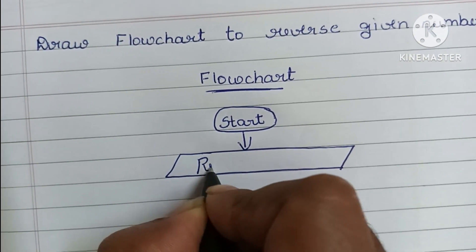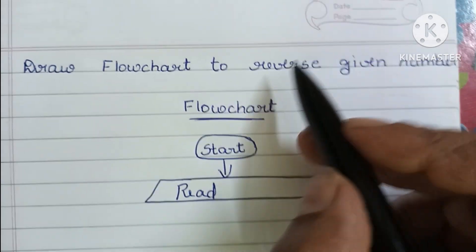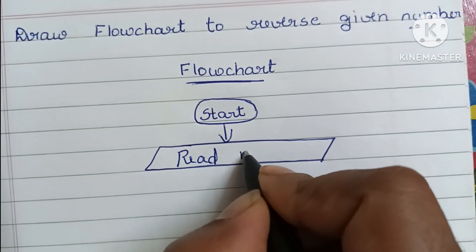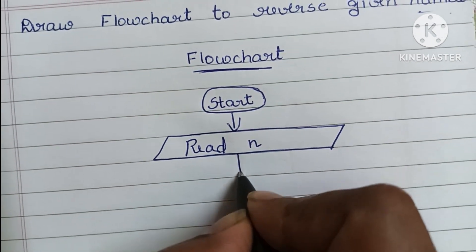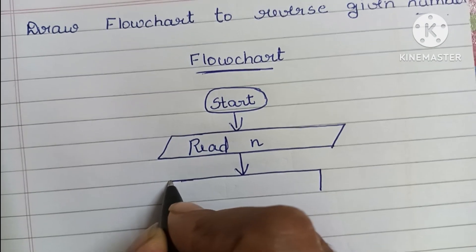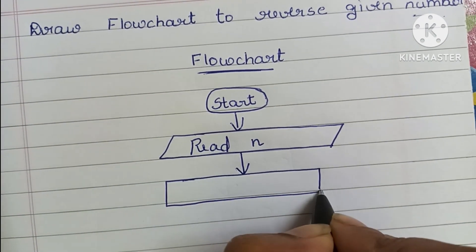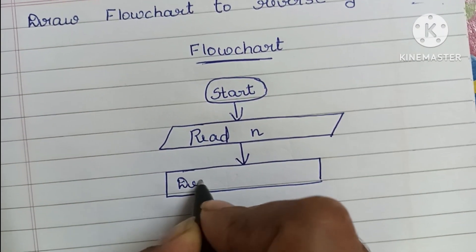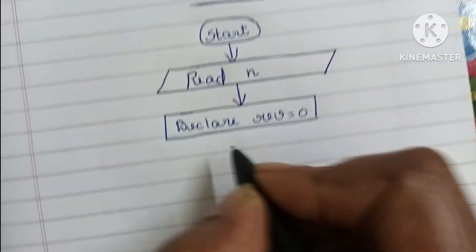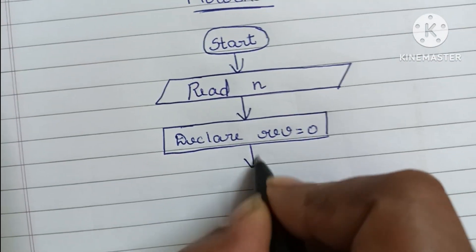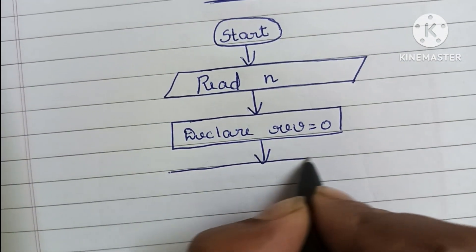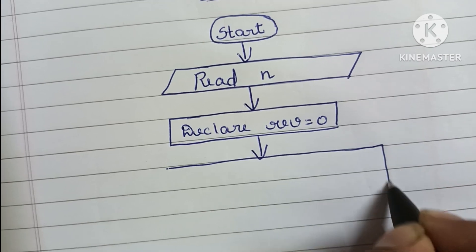Here we have to reverse a given number, so we read the N value. Next, initially reverse is equal to zero — we declare reverse = 0. This declaration is done within a rectangular shape.